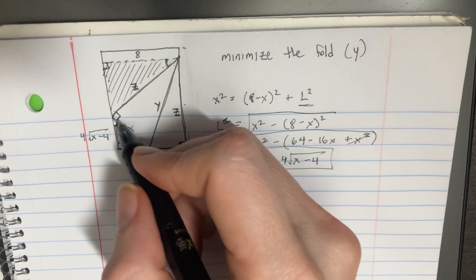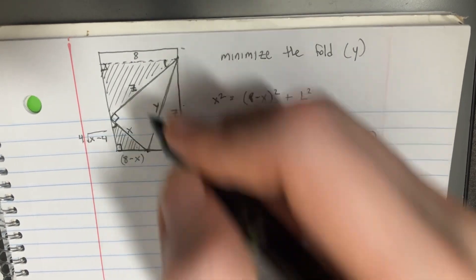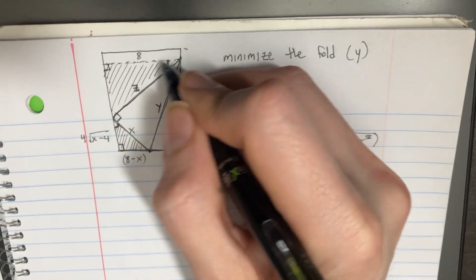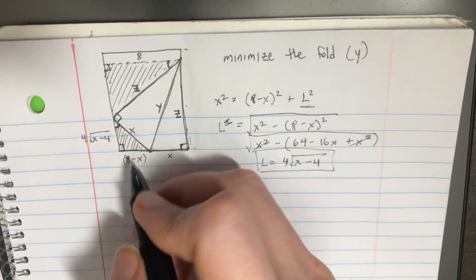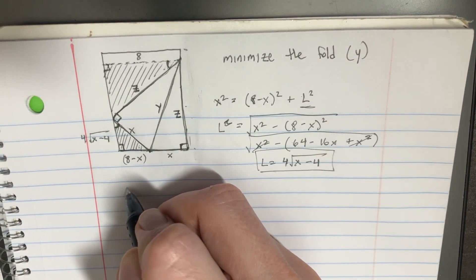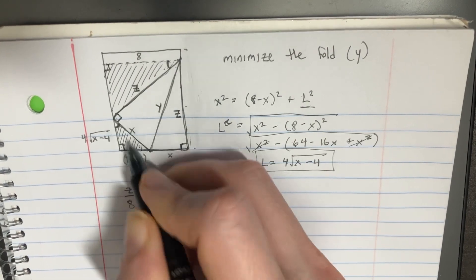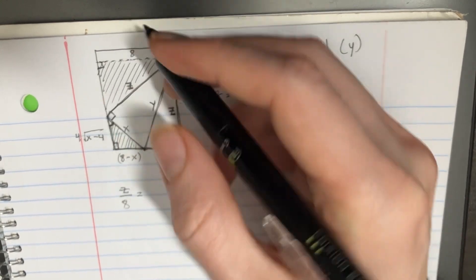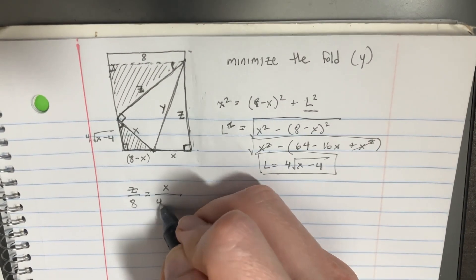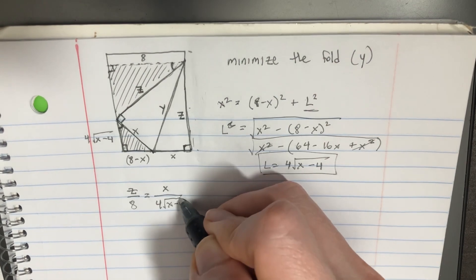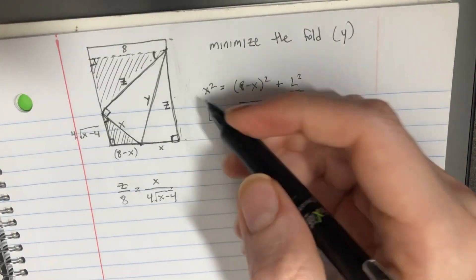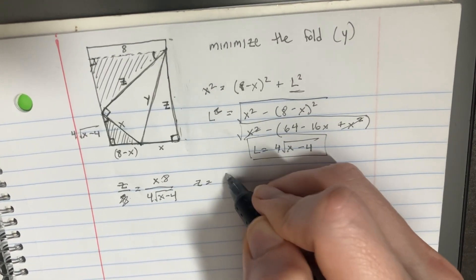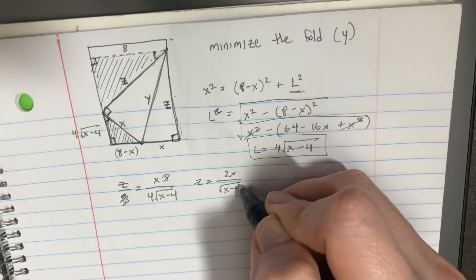Now we're going to go ahead and use the similar sides here. So we can say that the long side over 8 — this is the hypotenuse over the longer edge over there — is going to be like z divided by 8. That's going to be equal to the same thing here, like the hypotenuse divided by the longer side. So that would be x divided by 4 times the square root of x minus 4, because they're similar triangles. And so now we could solve for z, putting 8 over here, and it would be equal to 2x divided by the square root of x minus 4.